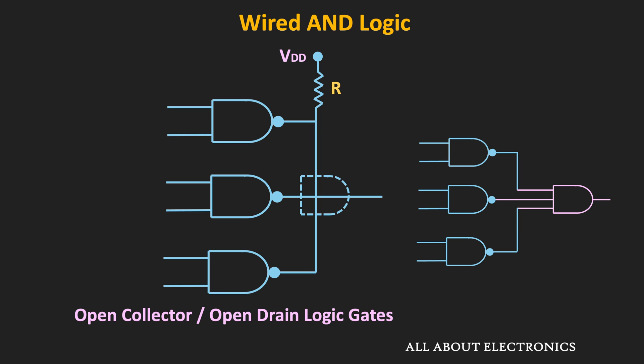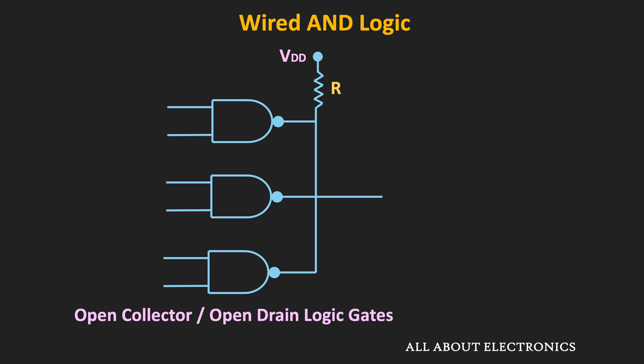To be precise, using the pull-up resistor, when open collector or open drain logic gates are connected together, this wired output will perform the logic AND operation. When all the outputs are logic 1 or logic high, the lower end of this resistor will be at high voltage, so there won't be any voltage drop across the resistor. That means the output at this node will be equal to logic 1 — whenever all outputs are 1, the overall wired output will also be 1.